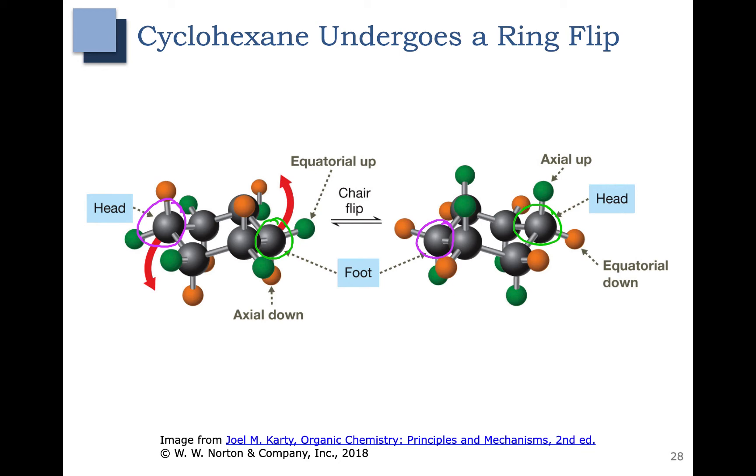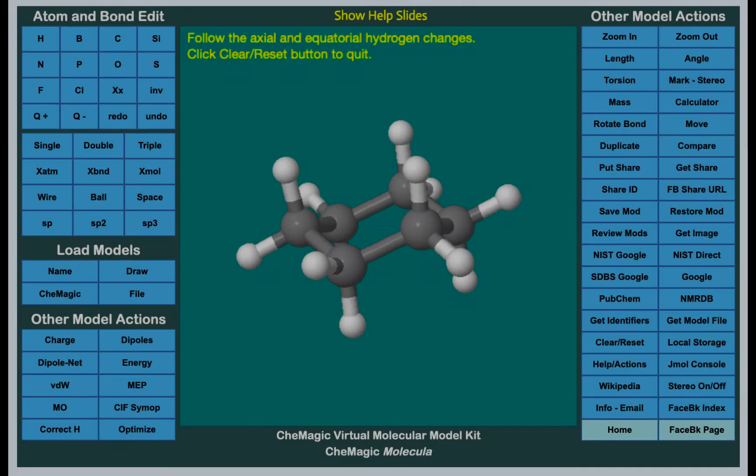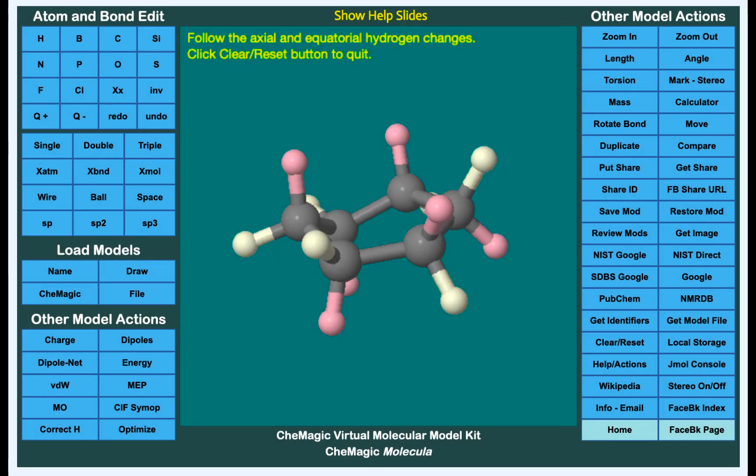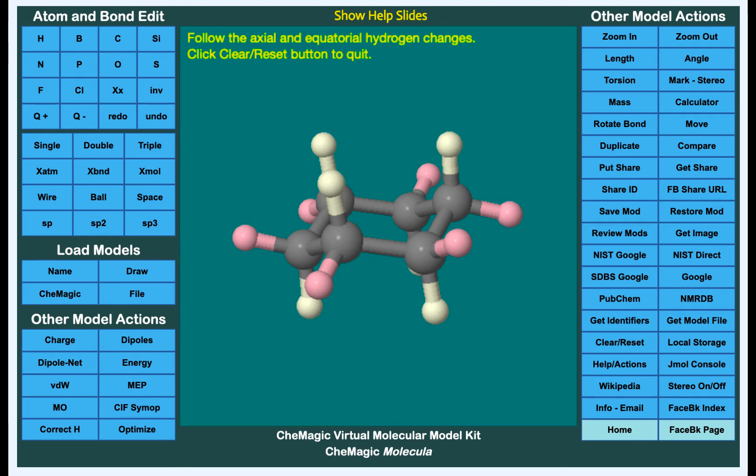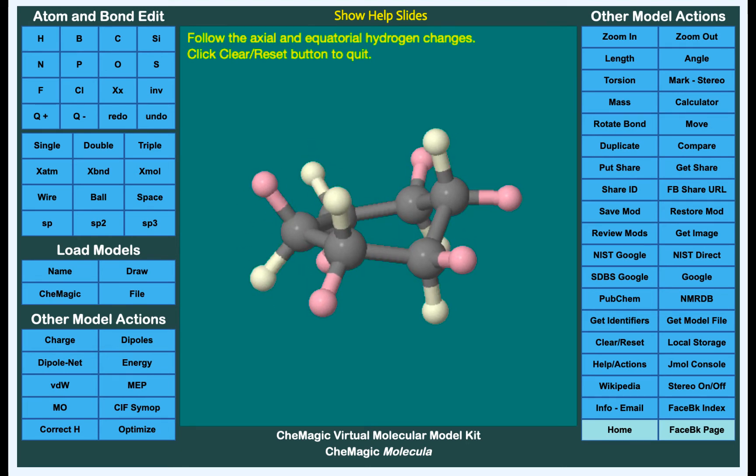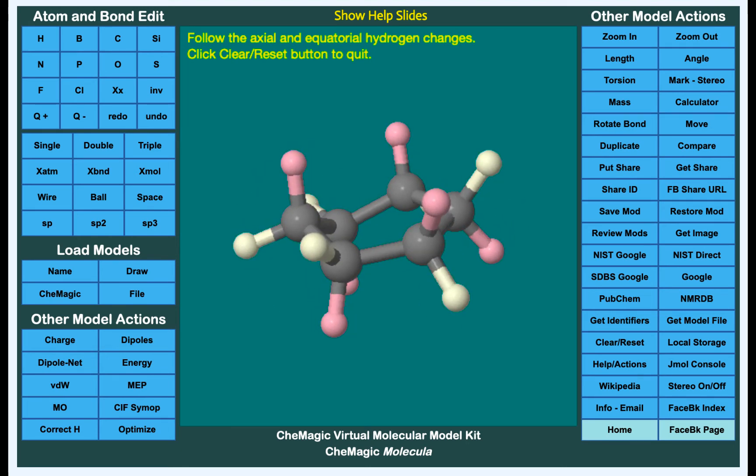Let's take a look at an animation of cyclohexane as it undergoes this ring flip. In this animation of the cyclohexane ring flip, you can see the pink hydrogens here are equatorial and now in the flip they're going to go to axial positions.